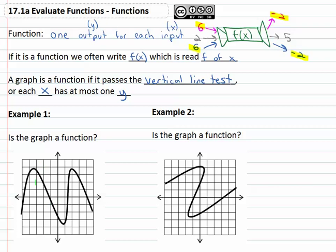So for example one here we want to know if this loopy guy is a function and what we do is we just kind of imagine a vertical line going through the graph and it only hits the graph once. Regardless of where I put this vertical line, it only hits the graph once. Slide that vertical line all over the place, it's only going to hit the graph once. There's not two points on a vertical line and so because it only hits the graph once, we say yes this is the graph of a function. It does work, it passes the vertical line test.